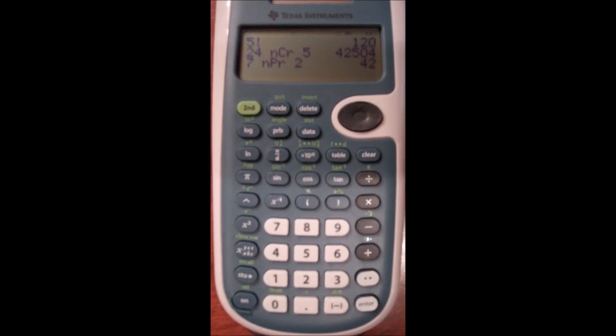So that's the use of the PRB button using the factorial, combinations, and permutation options on the TI-30 XS.